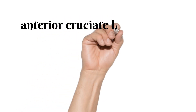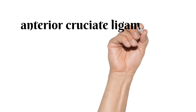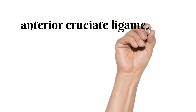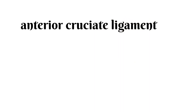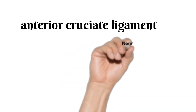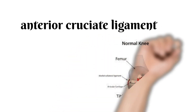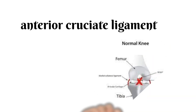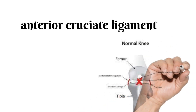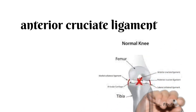The blood supply of the ACL is from the middle geniculate artery, while the nerve supply is from the posterior articular nerve from the tibial nerve. Its strength is 2200 newtons against anterior translation.